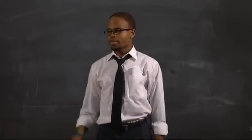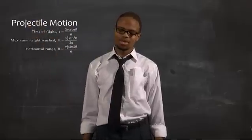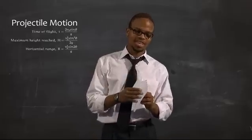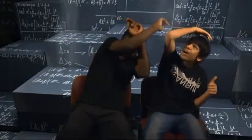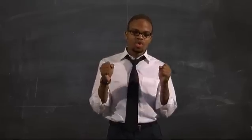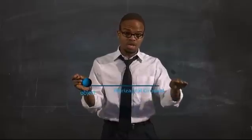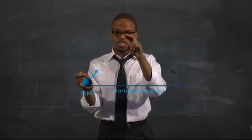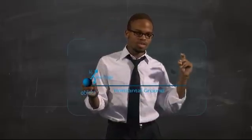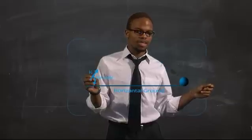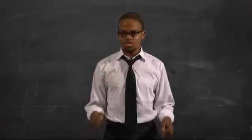Let's have a look at what we did last time — the projectile motion, my favorite topic. Let's do a little revision. We have an object and a horizontal ground. We throw the object at a velocity of v₀ at an angle of theta from the ground. That's the motion we discussed last time.